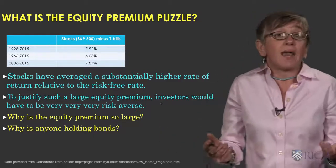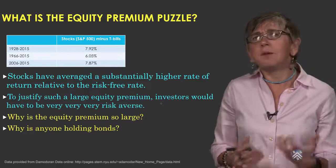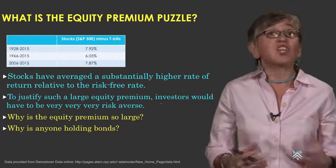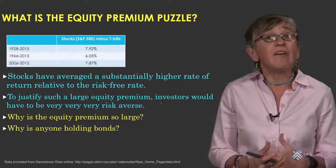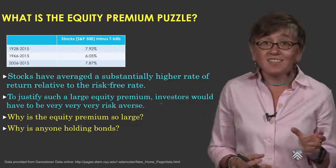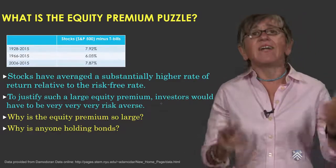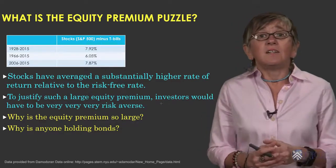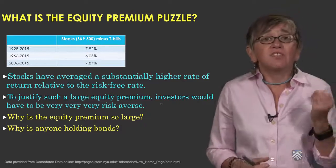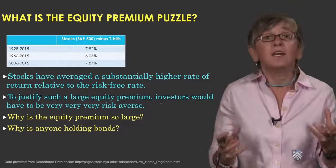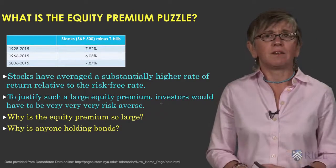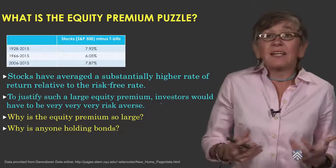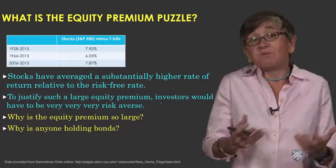What is the puzzle? The puzzle is why is the equity premium so large? Is it consistent with rational expected utility maximization models of economic behavior? It would be consistent if investors were very, very risk averse. In fact, researchers have estimated that it would take a risk aversion coefficient as high as 30 to justify such a large equity premium — when in fact, as we saw in the previous course, investors' risk aversion coefficient is typically around one.